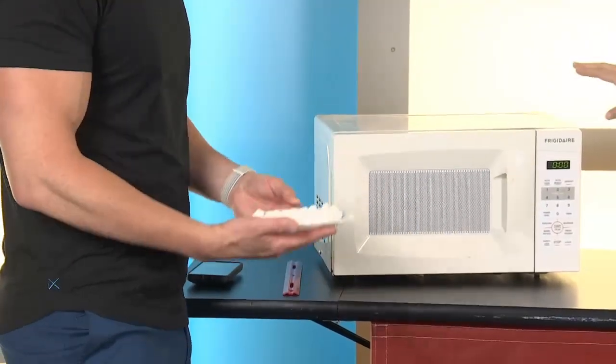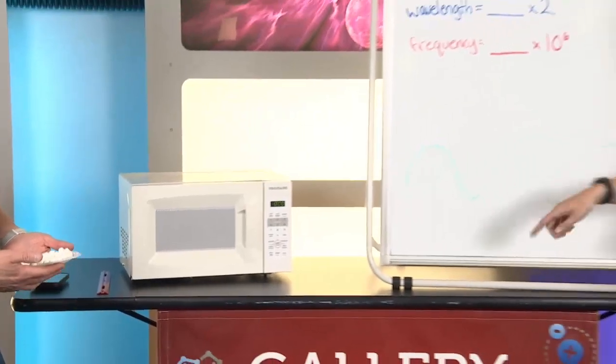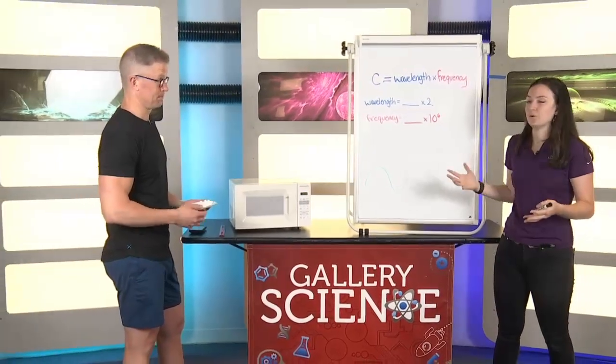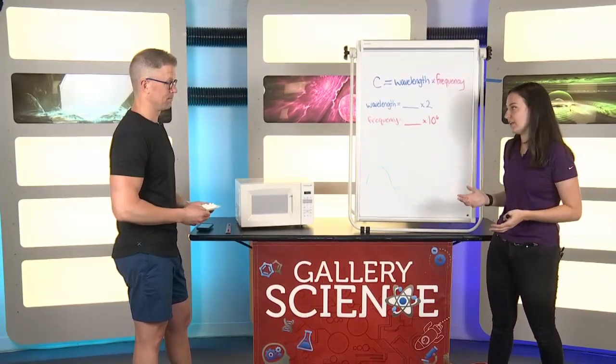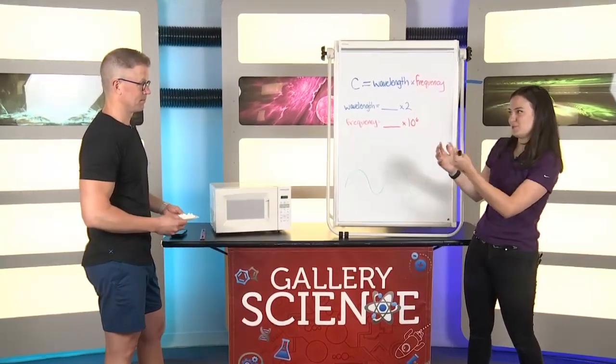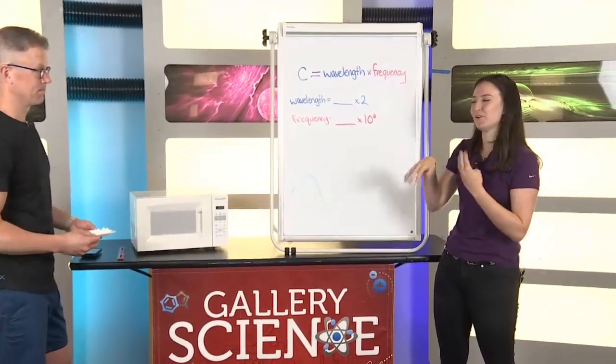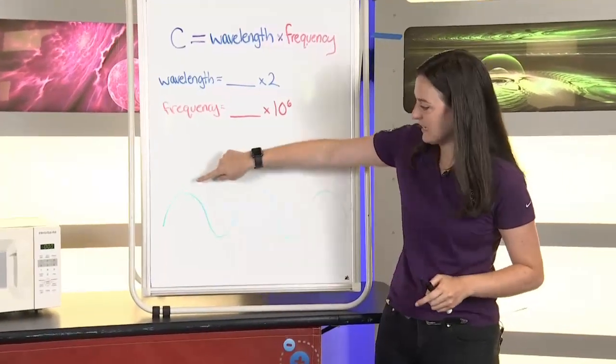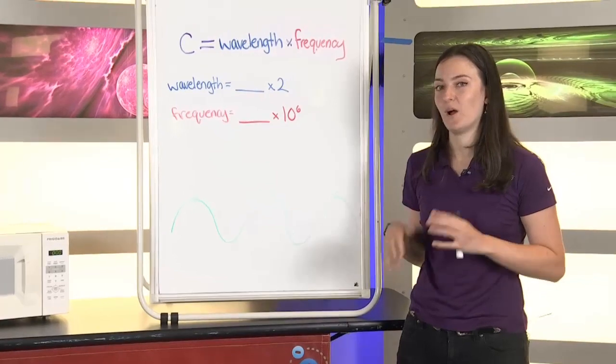So, real quick, the way microwaves actually cook food is they use microwaves. These invisible waves that move at the speed of light. Now, your microwave spins, which helps heat up the food evenly. But if we stop the microwave from spinning, we can find the spots at the tops and bottoms of these waves where all the cooking happens.